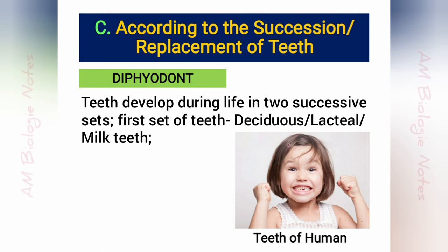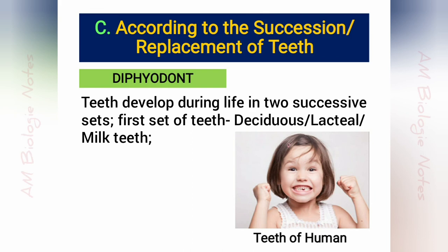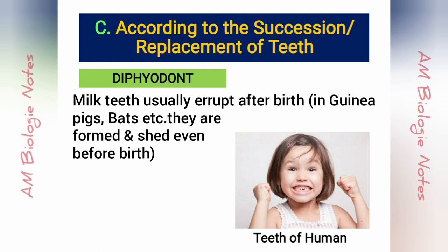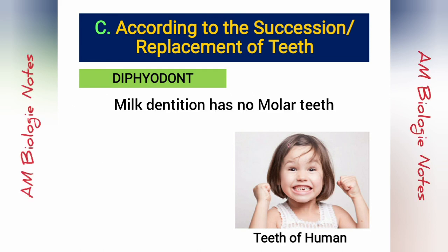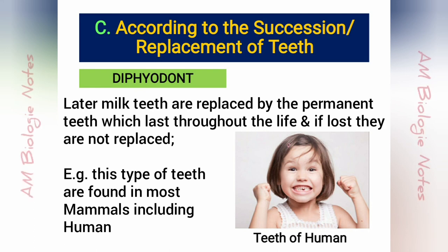Diphyodont: In most mammals, teeth develop during life in two successive sets, known as diphyodont. Teeth of the first set are called deciduous, lacteal, or milk teeth. They usually erupt after birth, but in guinea pigs, bats, etc., they are formed and shed even before birth. Milk dentition has no molar teeth. Later, milk teeth are replaced by permanent teeth which last throughout life. If lost, they are not replaced.